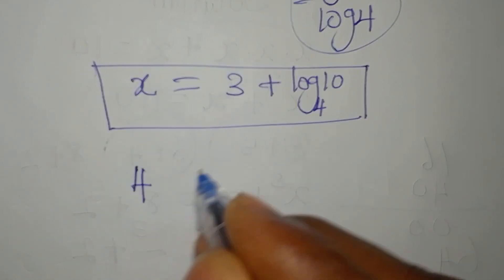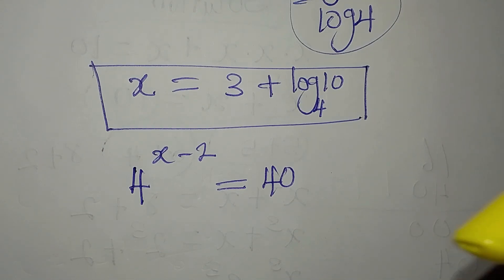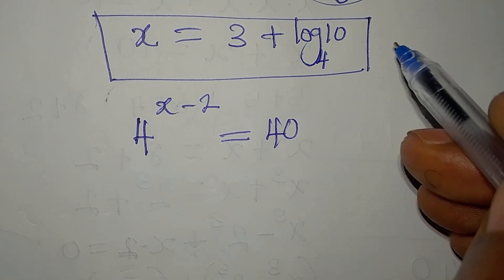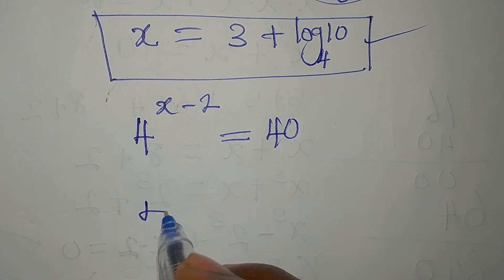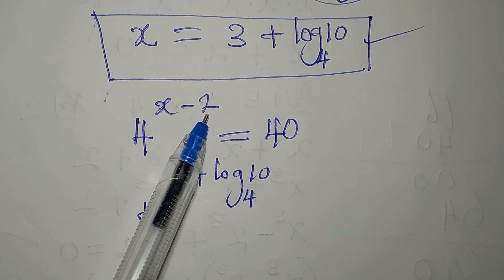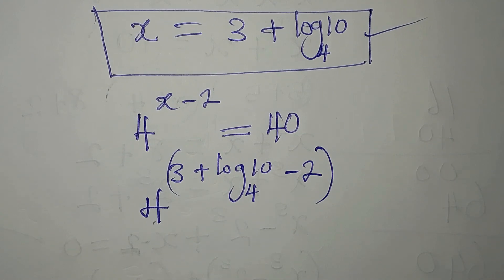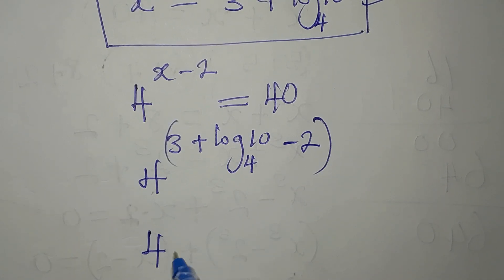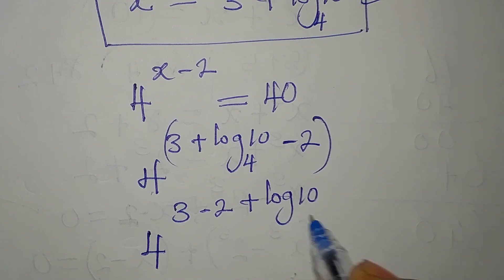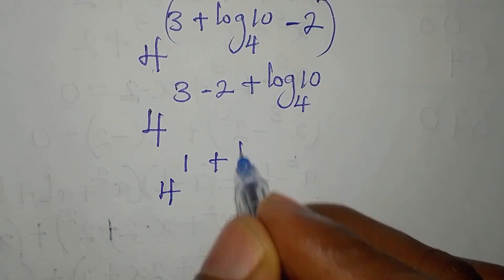The original equation is 4 to the power of x minus 2 equals 40. Substituting x equals 3 plus log 10 to base 4, we get 4 to the power of (3 plus log 10 to base 4) minus 2. So this becomes 4 to the power of 3 minus 2, plus log 10 to base 4.